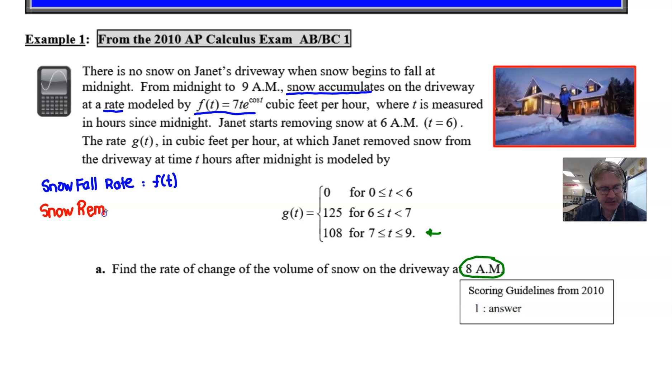That's the act of her shoveling snow. And there is a rate associated with that. And that's what g(t) is because it says up here the rate g(t) of which Janet removed snow is modeled by this thing. It is very common throughout the AP Calculus Exam and the course itself that you will be presented a model that represents a rate that doesn't look like a rate. It doesn't look like a derivative. We don't see prime marks attached to f(t) or g(t). But we, as students and teachers, have to realize that those are rates nonetheless.